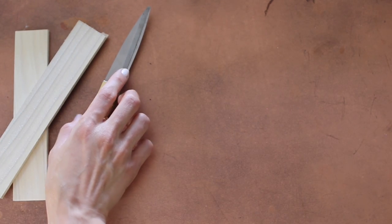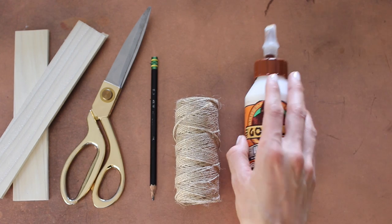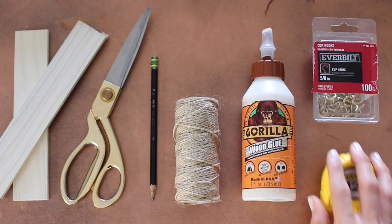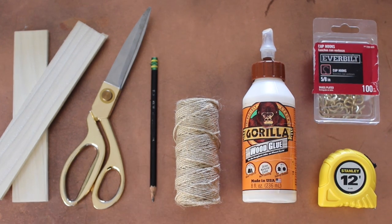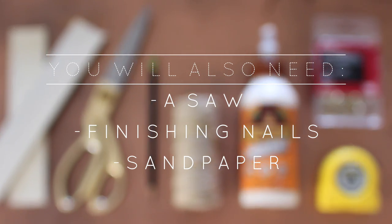You are going to need some craft wood which you can find at Michael's, some scissors, a pencil, some rope or twine, wood glue, eye hooks, and a measuring tape plus some larger pieces of craft wood which you can get from Michael's as well and nails which I did not show.